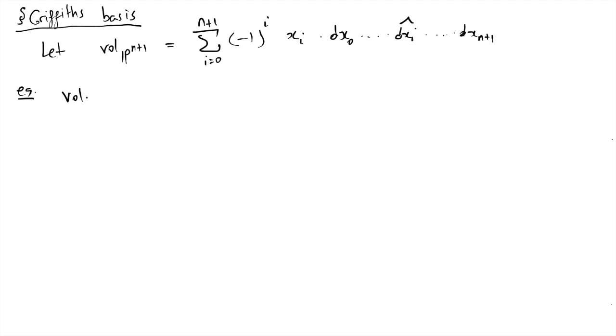So just to clarify the notation, let me give you a few examples. For example, the volume form for P^1, n equals 0, will be x_0 dx_1. So dx_0 here was omitted. i equals 0, I have x_0, dx_0 is omitted. Minus x_1 times dx_0. And now I omit dx_1. Let's do one more.